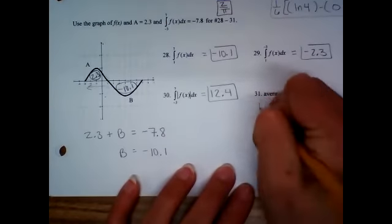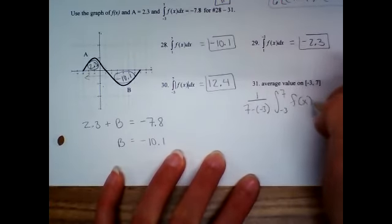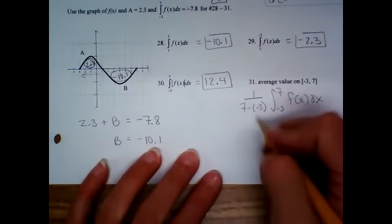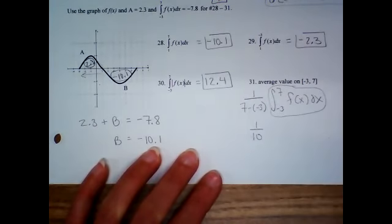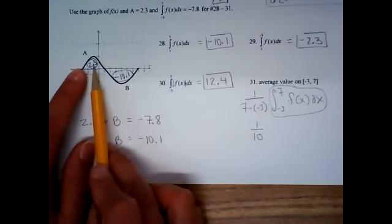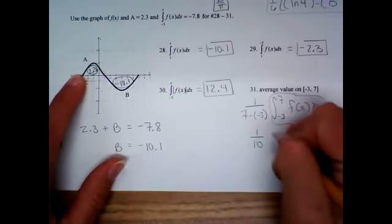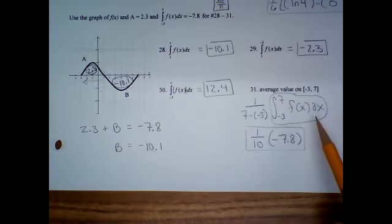Average value from negative 3 to 7: write it out as one over (7 minus negative 3), then integral from negative 3 to 7 of f(x) dx. People try to do this without setting it up, and you will mess it up with two negatives there. The fraction out front is one-tenth. Then you already have that integral from negative 3 to 7 — it was given as negative 7.8. Don't try to do an antiderivative; there's no function given, just f(x).